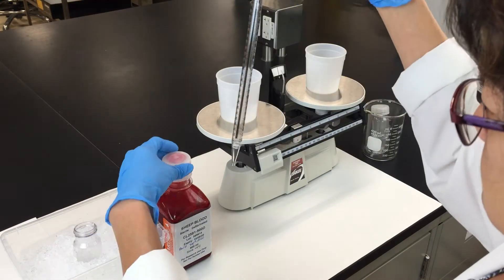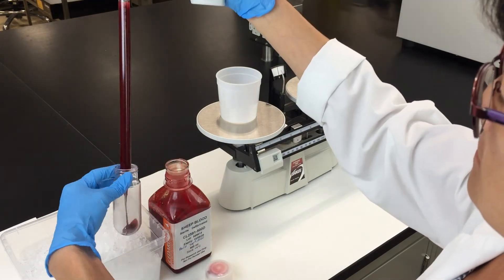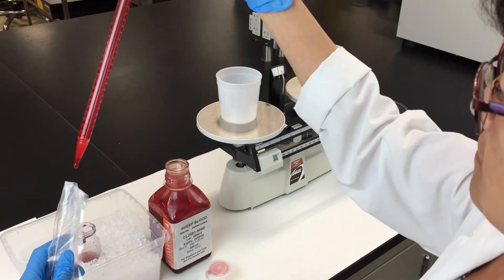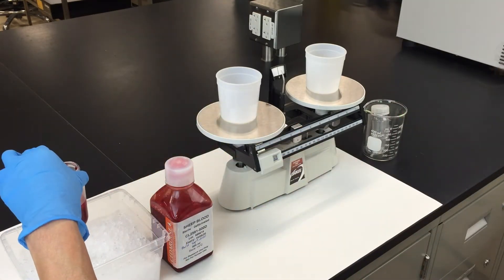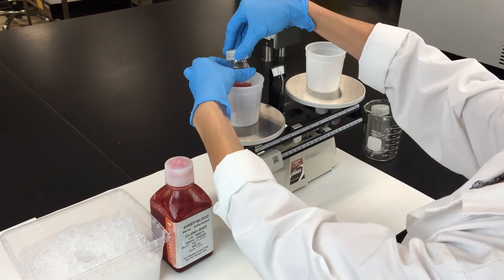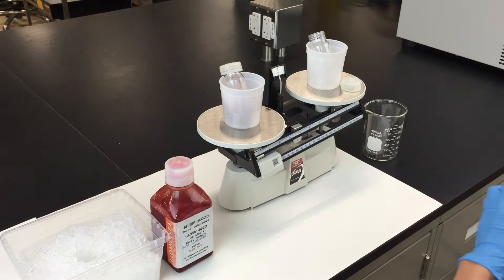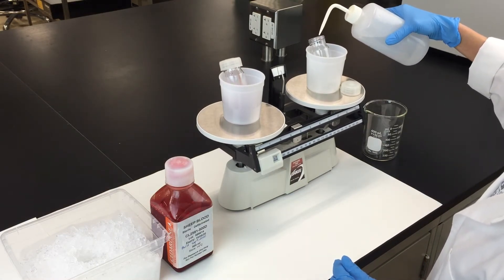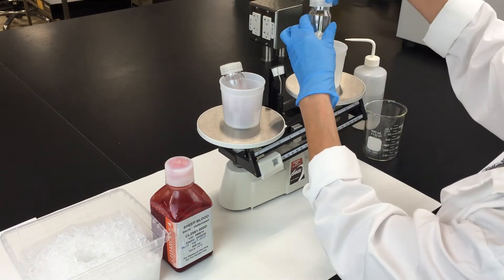Using a sterile pipette, transfer 30 ml of the blood to a centrifuge tube. Now you want to balance the tube with a second tube filled with water. Once the tubes are balanced, you're ready to centrifuge.